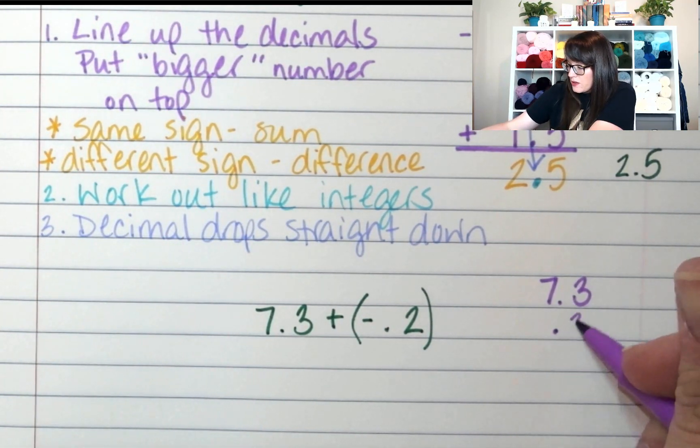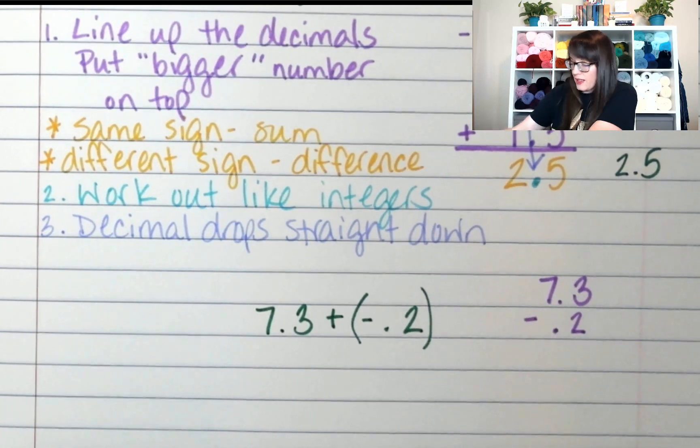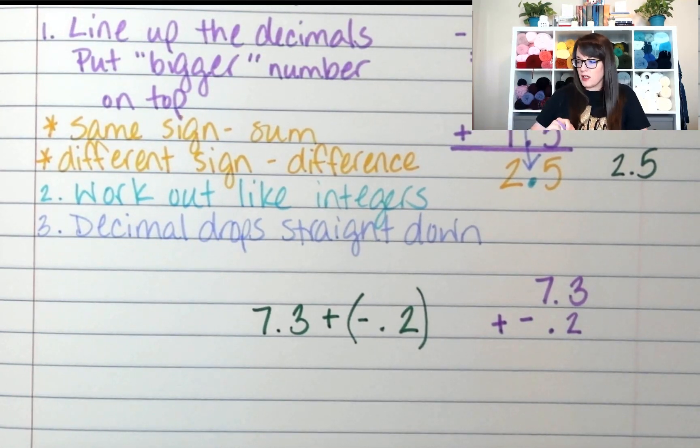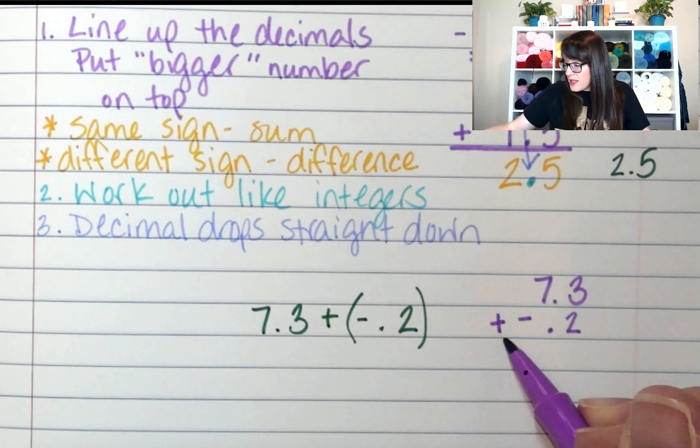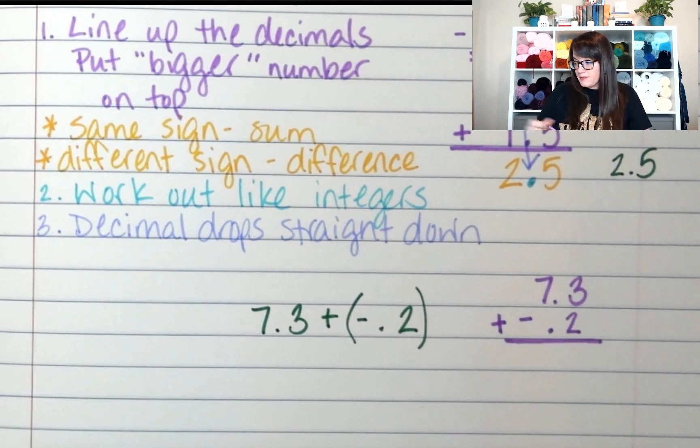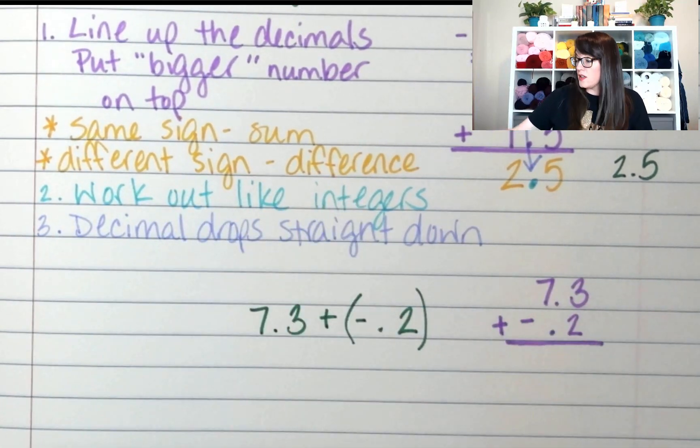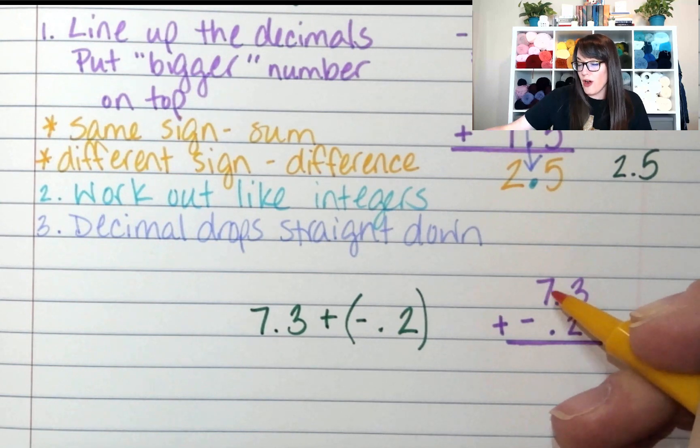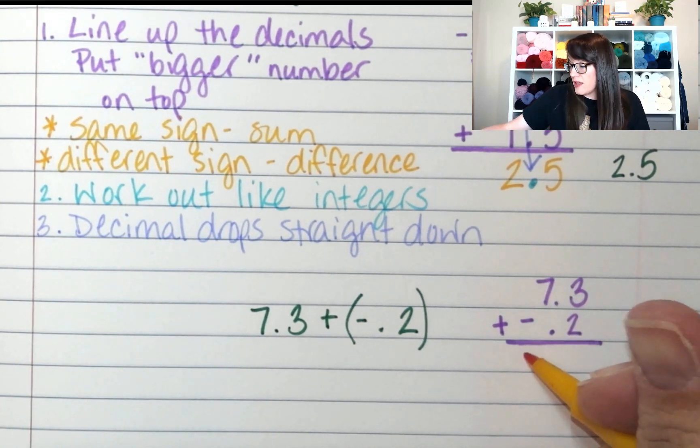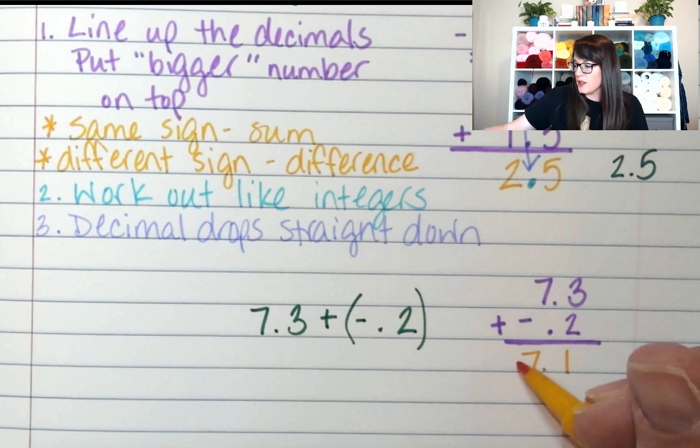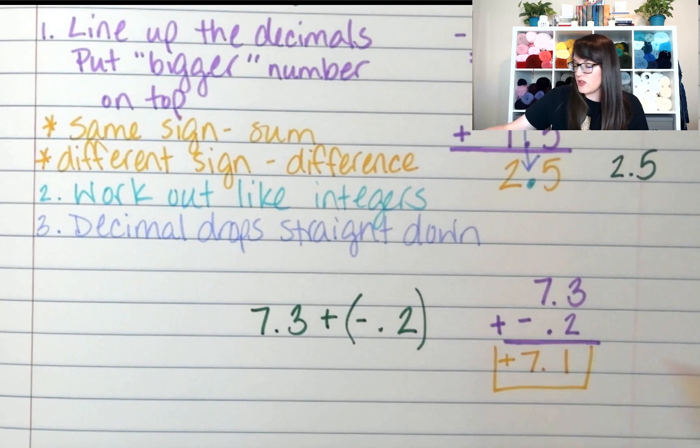And I need to line up the decimals. So this is a negative 0.2, so I'm going to put that 0.2 right there. And I'm going to keep the negative sign, but don't forget I'm adding. So do these two numbers have the same sign or are they different signs? They're different signs. So I'm going to work it out like it's integers. Different sign means I'm going to find the difference. So I'm subtracting 0.2 from 7.3, which comes out to 7.1. The positive was bigger, so we keep the positive as the winning team here.